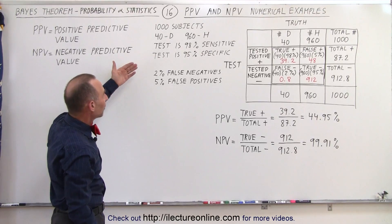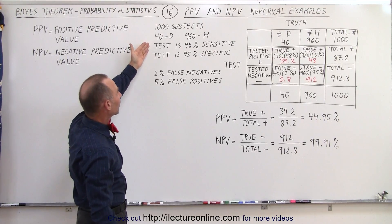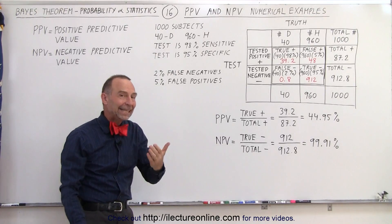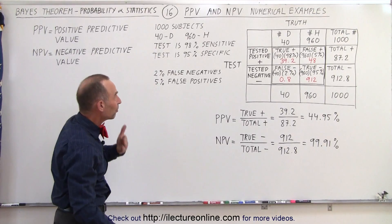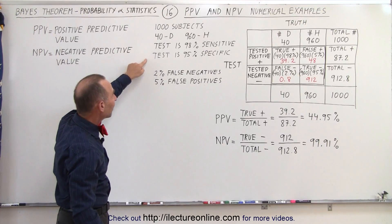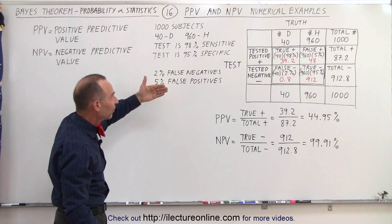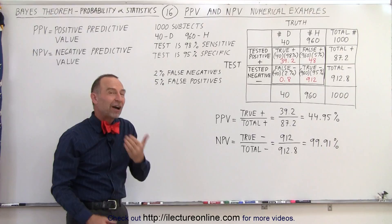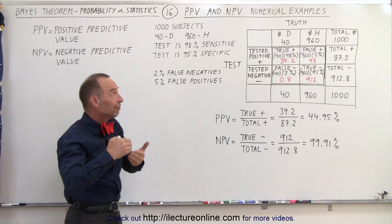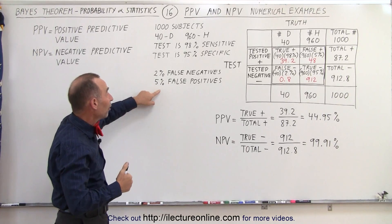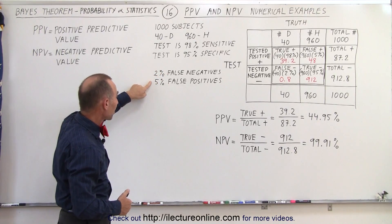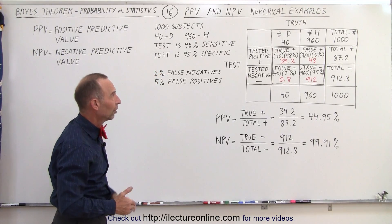We're going to use the same numbers as before. The test is 98% sensitive, which means 98 out of 100 will test positive if they are indeed positive. The test is 95% specific, which means 95% who are negative will be tested as negative and 5% will be false positives. So we'll have 2% false negatives and 5% false positives.